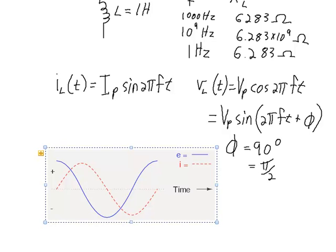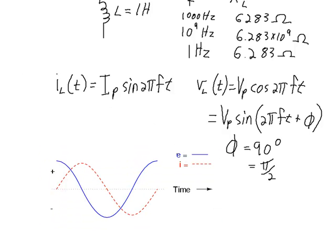So voltage in this case is leading current by 90 degrees, and we can see that in a graph here. Voltage is reaching the peak before the current reaches its peak, so voltage is leading. If we call this time zero, then this is a cosine and this is a sine wave. The phase difference between the peak of the cosine wave and the peak of the sine wave is 90 degrees, or one-quarter of a full cycle, or pi over 2.